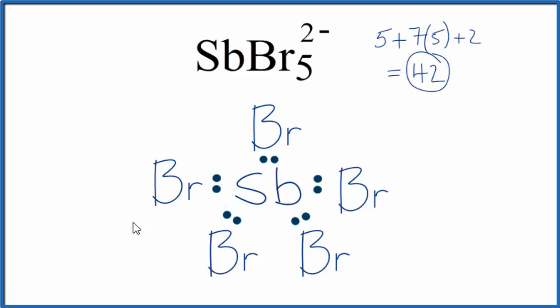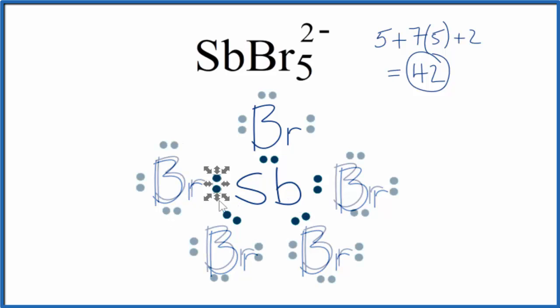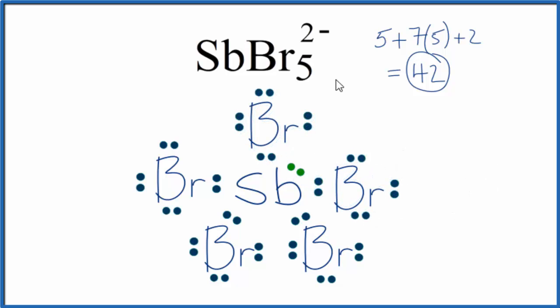Now we'll complete the octets on the bromine atoms. At this point, we've used 40 valence electrons. All of the bromines have octets, the Sb has an expanded octet, that's okay. We have 42 though, so we have 2 valence electrons left. Let's put them on the Sb, make them a different color so we can see them. So this is the Lewis structure for SbBr5 2-.